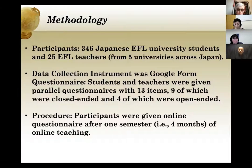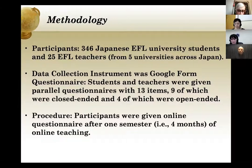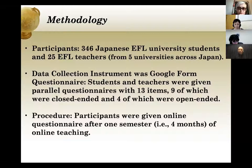About the methodology: we had 346 Japanese EFL university students and 25 EFL teachers across five universities in Japan. Teachers comprised both Japanese and foreign teachers, and the universities included national, prefectural, and private universities in both small towns and big cities — basically an opportunistic sample. The data collection instrument was simply a Google Form questionnaire. Students and teachers were given parallel questionnaires with 13 items: nine closed-ended and four open-ended.